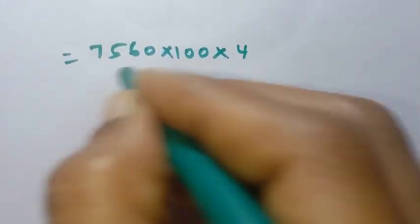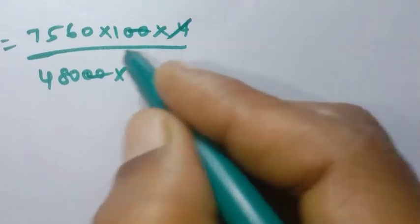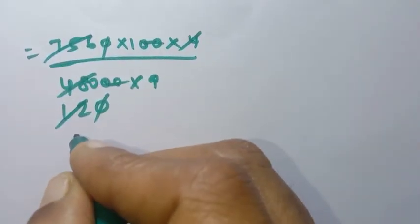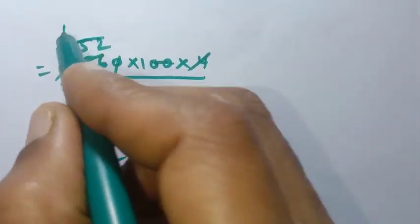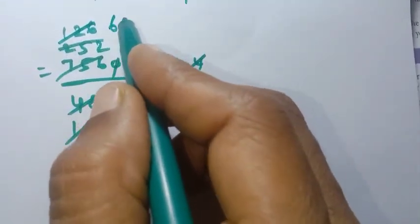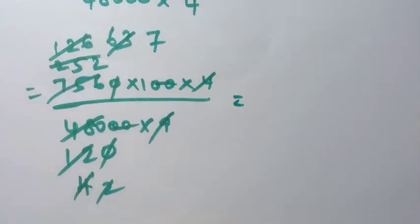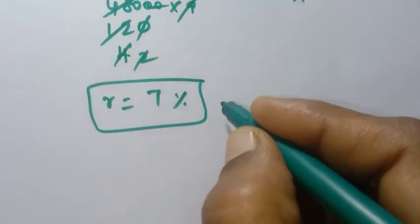Rearranging: R = 7,560 into 100 into 4 divided by 48,000 into 9. Cancelling common factors: 7,560 divided by 9 = 840, 48,000 divided by 48 gives simplification, and after full cancellation, rate of interest R = 7%. So the rate of interest per annum is 7%.